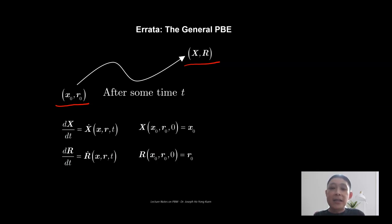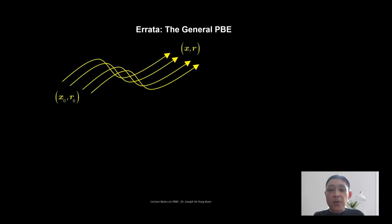If we are able to actually compile all the solutions or all the trajectories of the particles that originate from a particular initial state, and we are able to compile the trajectory of the particles moving through the internal and external coordinate space with time, then we would say that we are able to describe the trajectory or the solutions of x and r, small x and small r, by these two differential equations.